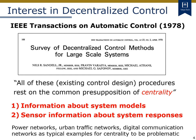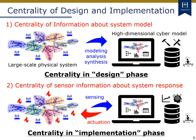Let's see more about the two centralities. The first centrality is concerned with the information about system models, which corresponds to the centrality in the design phase. For large-scale physical systems such as power systems, we may obtain output data from distributed sensors. From such big data of sensor output information, we can do modelling and analysis of the system to get a high-dimensional cyber model.